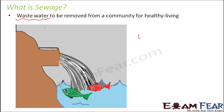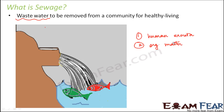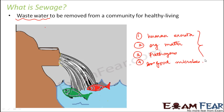So the composition of sewage includes human or other animal excreta, organic matter, pathogens — the disease-causing microbes — and also some good microbes. Due to the presence of human excreta, organic matter, or pathogens, sewage turns out to be extremely harmful, because whenever pathogens are present they are capable of causing disease in a person or an animal.